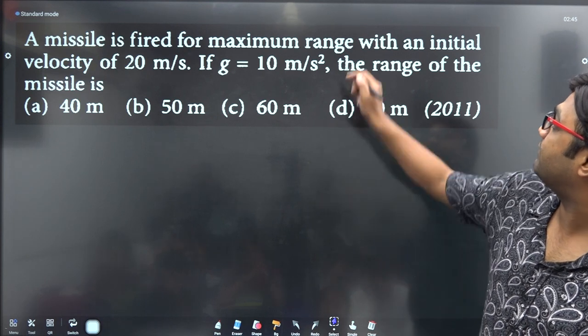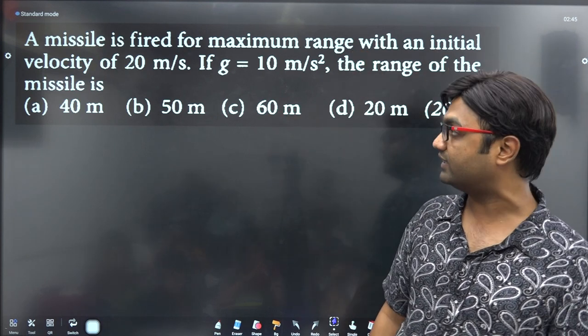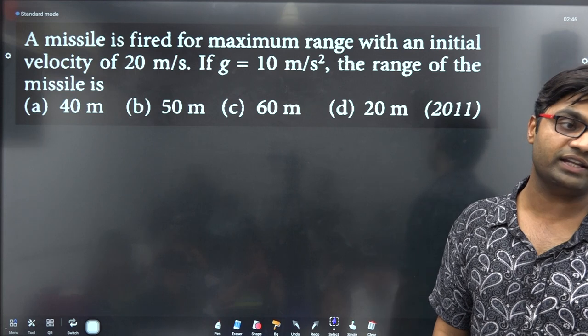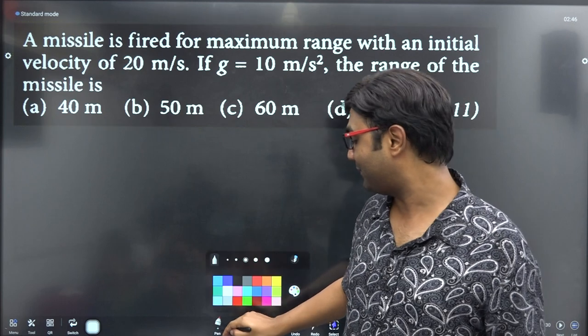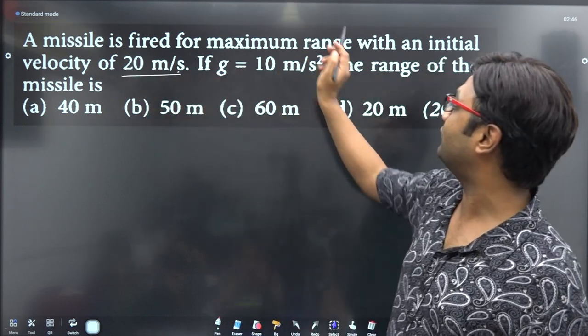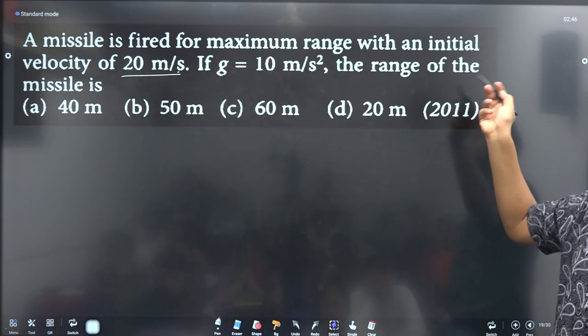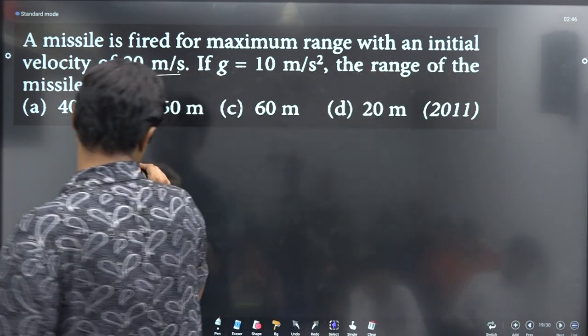At 45 degrees, if I have an initial velocity of 20 meters per second, given that theta equals 45 degrees and g equals 10, we need to find the range of the missile.